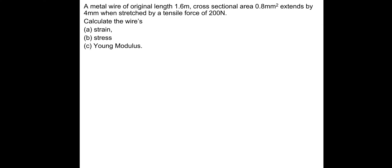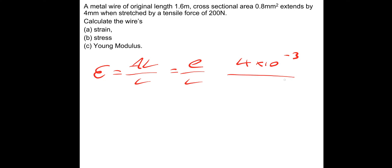Have a go at this one. A metal wire of original length 1.6 metres, cross-sectional area 0.8 millimetres squared, extends by 4 millimetres when stretched by a tensile force of 200 newtons. Calculate the wire strain. Strain epsilon equals change in length over original length: 4 millimetres (4 times 10 to the minus 3) divided by 1.6 metres, giving a strain of 2.5 times 10 to the minus 3, or 0.25%.